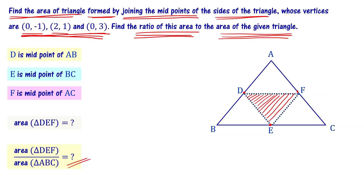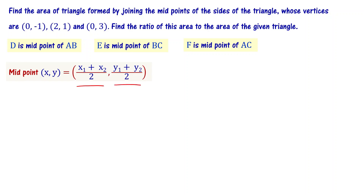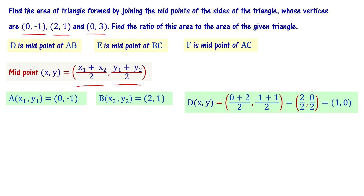The important thing to note: D is the midpoint of AB, E is the midpoint of BC, and F is the midpoint of AC. Let A = (0, -1), B = (2, 1), and C = (0, 3). We use the midpoint formula: (X, Y) = ((X1 + X2) / 2, (Y1 + Y2) / 2).